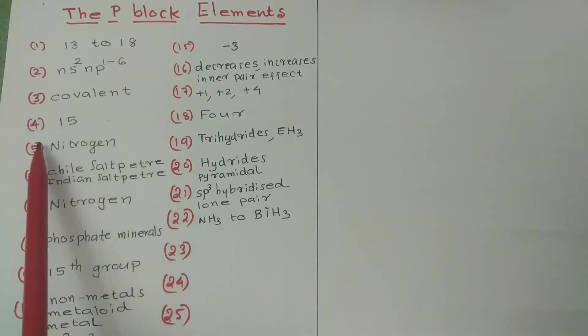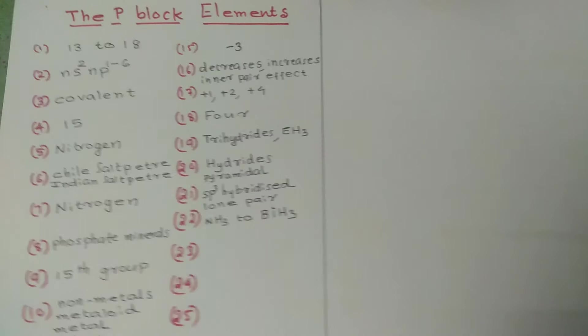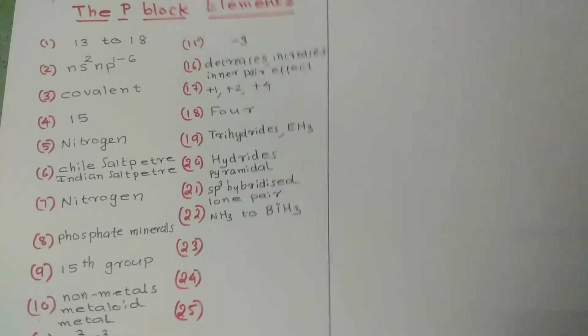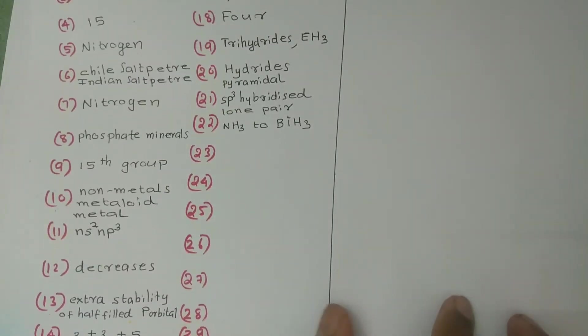3 — covalent. 4 — 15. 5 — nitrogen. 6 — Chile saltpeter. 7 — nitrogen. 8 — phosphate minerals.